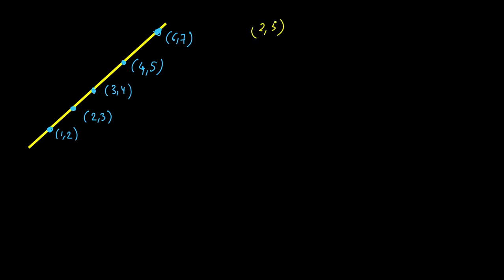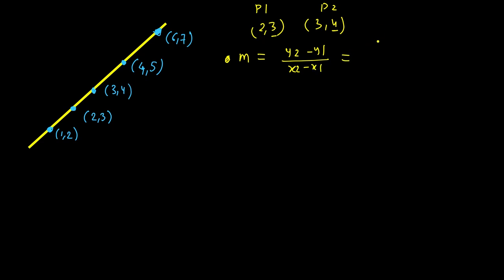The slope is calculated by taking any two points on a line and subtracting their coordinates. For example, take points p1 = (2, 3) and p2 = (3, 4). The slope m = (y2 - y1) / (x2 - x1) = (4 - 3) / (3 - 2) = 1/1 = 1. The second value in the coordinate pair denotes y, the first denotes x.